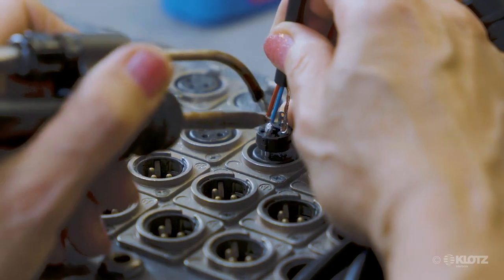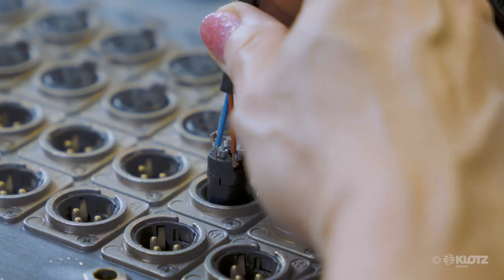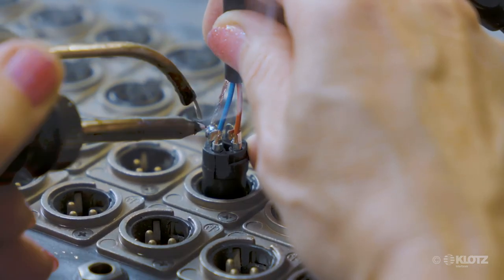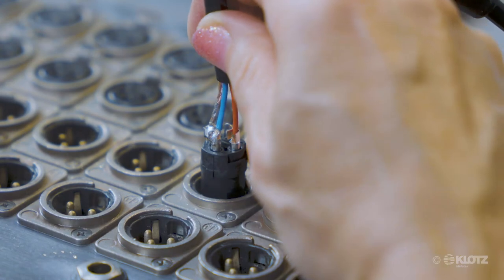Solder all three conductors. Repeat the same procedure with the 3-pin female insert and solder all three conductors into the solder caps.